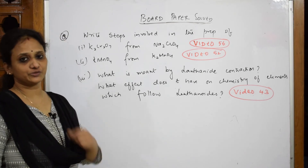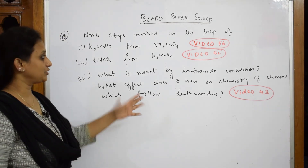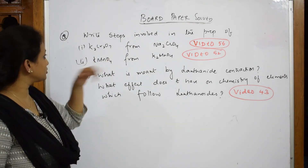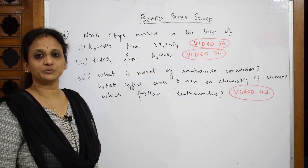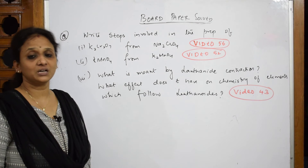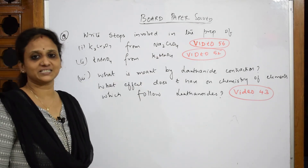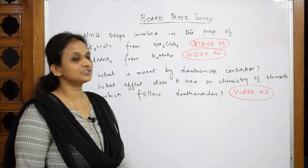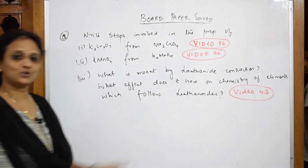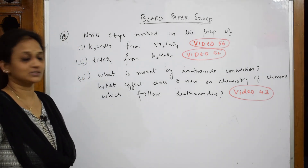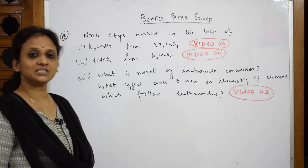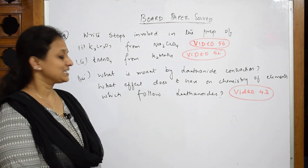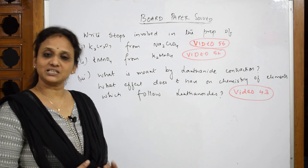Let us do part B of your 2007 paper. I have already done part A. In part B, all three equations I have already done. They have asked us to show the preparation of potassium dichromate from sodium chromate — please learn that in video 56. The preparation of KMnO4 from K2MnO4 is covered in video number 52. The last question is about lanthanide contraction, detailed in video number 43. Please watch those videos for a clear explanation.